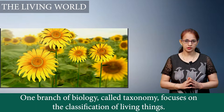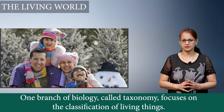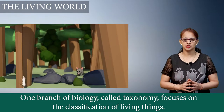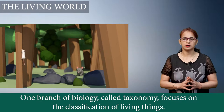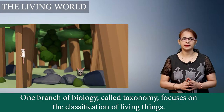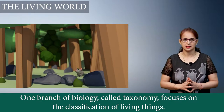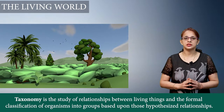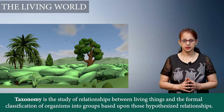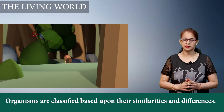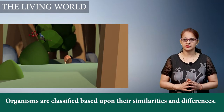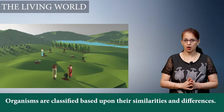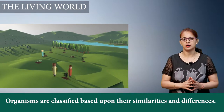The branch of biology called taxonomy is the one which is based on this. It involves the classification of living organisms based on their similarities and differences. Thus taxonomy is a branch which indicates the relationship among different living organisms, as well as classification based on groups which are either alike or different in one way or another.